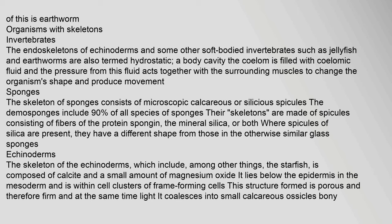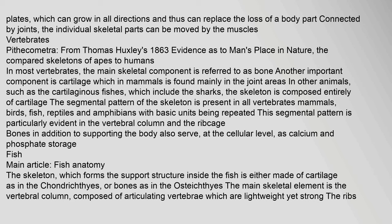The skeleton of sponges consists of microscopic calcareous or siliceous spicules. The demosponges include 90% of all species of sponges; their skeletons are made of spicules consisting of fibers of the protein spongin, the mineral silica, or both. The skeleton of the echinoderms, which include the starfish, is composed of calcite and a small amount of magnesium oxide. It lies below the epidermis in the mesoderm and is within cell clusters of frame-forming cells. This structure is porous and therefore firm yet light; it coalesces into small calcareous ossicles, or bony plates, which can grow in all directions and can replace the loss of a body part. Connected by joints, the individual skeletal parts can be moved by the muscles.